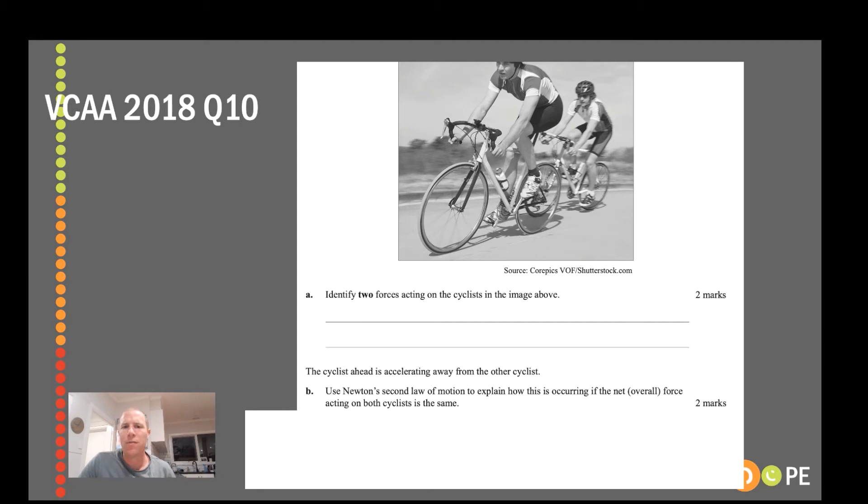Let's see if we can apply our understanding to a VCAR question. This is from the 2018 exam. We're particularly interested in question 10b. VCAR will often give you a couple of the variables and you have to tell us how that will affect the third variable. VCAR told us that this guy is accelerating faster than this guy. They've also told us that the force that both of these cyclists are applying onto these bike pedals is the same.